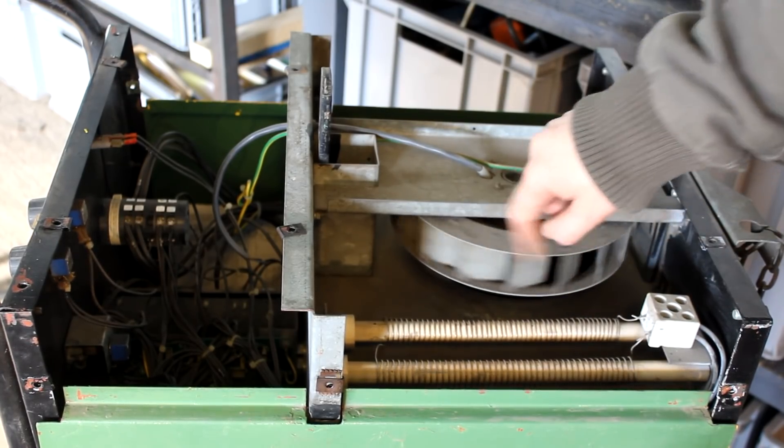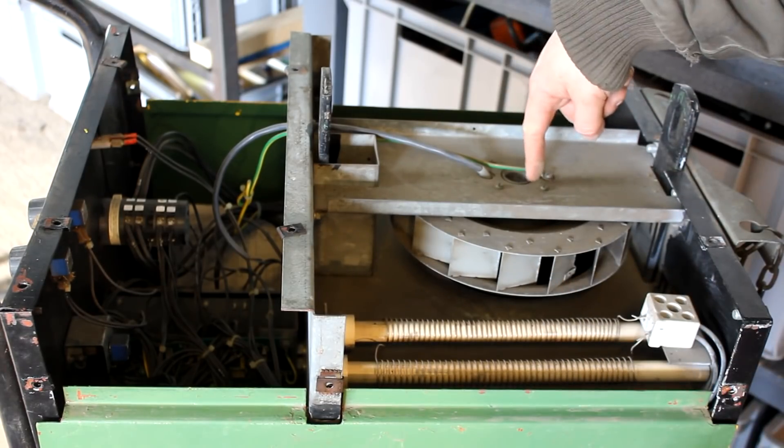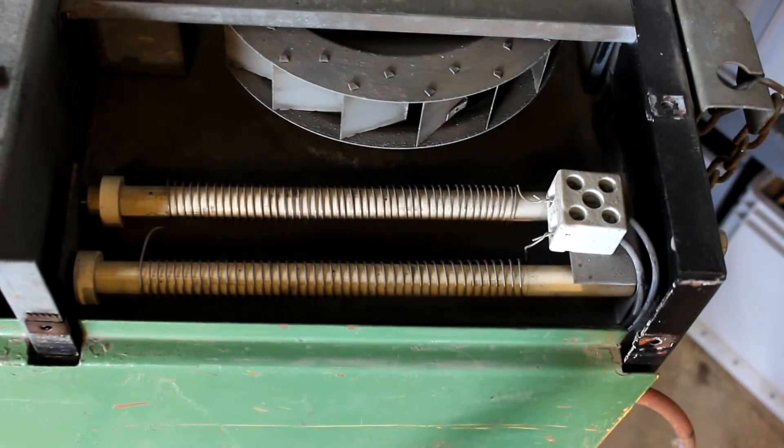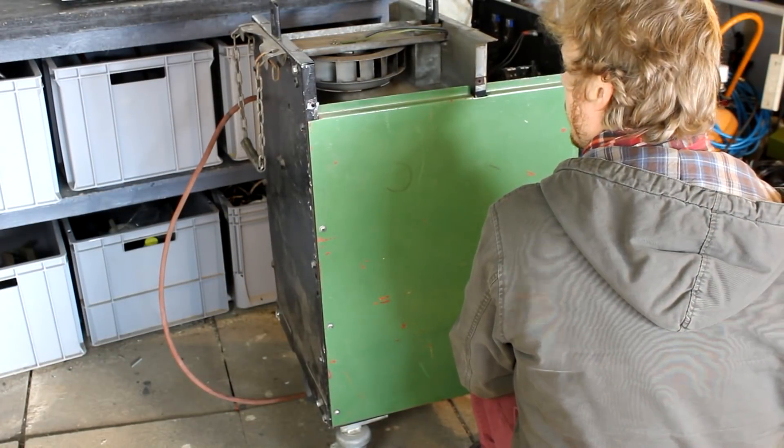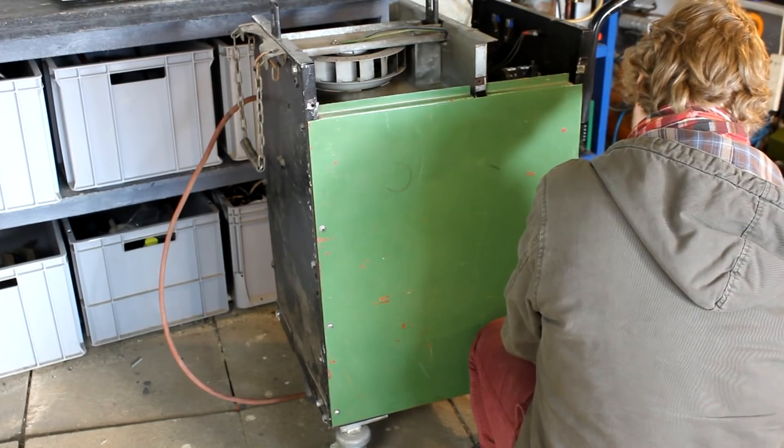But most importantly, probably the transformer itself, because that is one of the cheapest ways to allow you to size down that transformer, which otherwise would have been even larger than it is already. So next, I removed the two sheets on the side so that we can take a closer look inside the bottom of the machine.